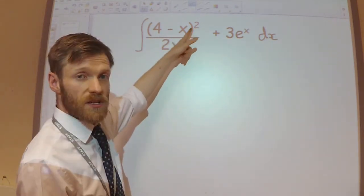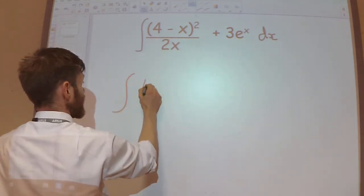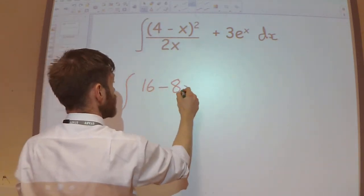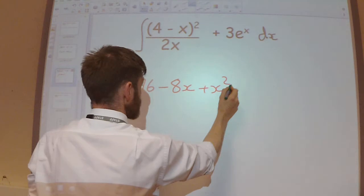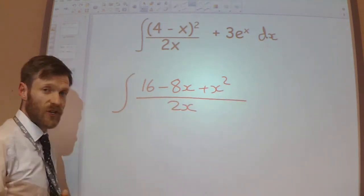So I'm going to expand the brackets and then see what simplification I can do. Expanding the brackets here, I get 16 minus 8x plus x squared, and that's all divided by the 2x.